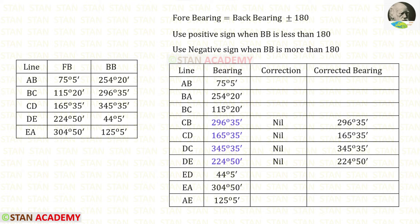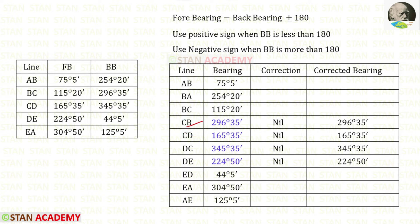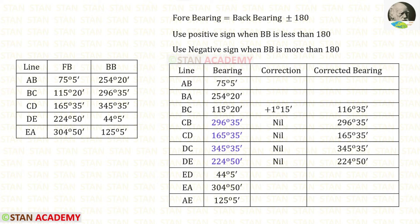If we know the correct back bearing we can easily find the forebearing. The formula is: back bearing plus or minus 180. If back bearing is less than 180 we use the positive sign; if more than 180 we use the negative sign. We know that CB is the back bearing of BC, and its correct bearing is 296 degrees 35 minutes. Since this is more than 180, we use the negative sign: 296 degrees 35 minutes minus 180 degrees gives us 116 degrees 35 minutes. The correction applied is positive 1 degree 15 minutes.